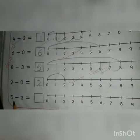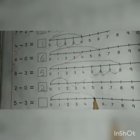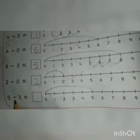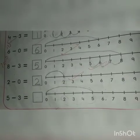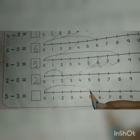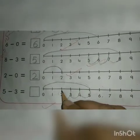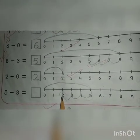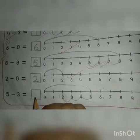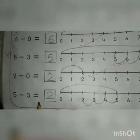And this is number 5. Now we will go to 5 starting from 0. And this is the sign of minus. And next number is 3. We will go three steps back. 1, 2, 3. Where will you stop? At number 2. Now our answer is 2. Now we will write number 2. 5 minus 3 is equal to 2.